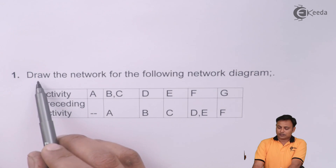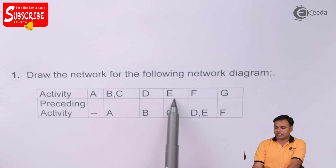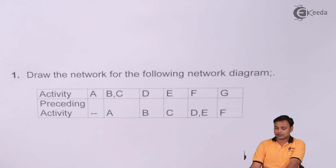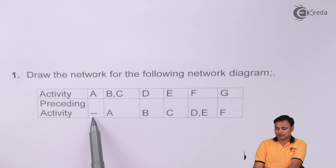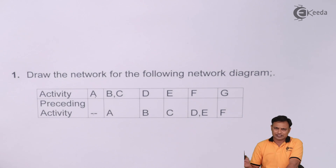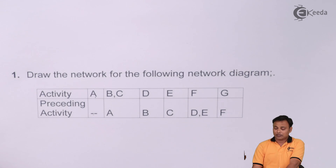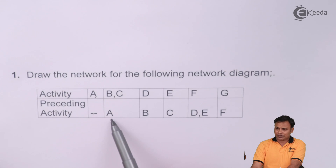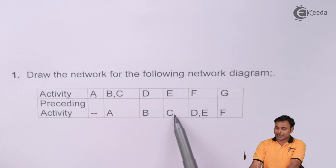Here is the problem: draw the network for the following network diagram. We have activities A, B, C, D, E, F, and G — seven activities total. The second row shows the preceding activity. Against A there is a dash, indicating there is no activity before A, so A is the first activity. Before B and C comes activity A. Before D comes activity B. Before E, the preceding activity is C.